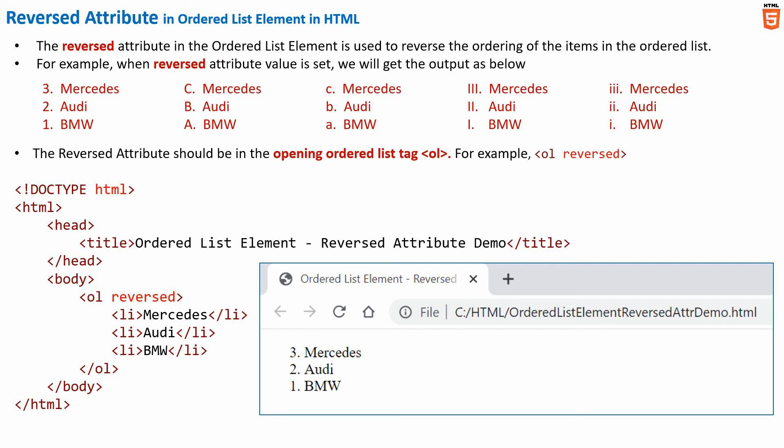And as we have specified the reverse attribute in the opening ordered list tag, the list is appearing in the reversed order. Now let me quickly go into the HTML editor and write a sample code to get a better understanding of the reverse attribute in the ordered list element.